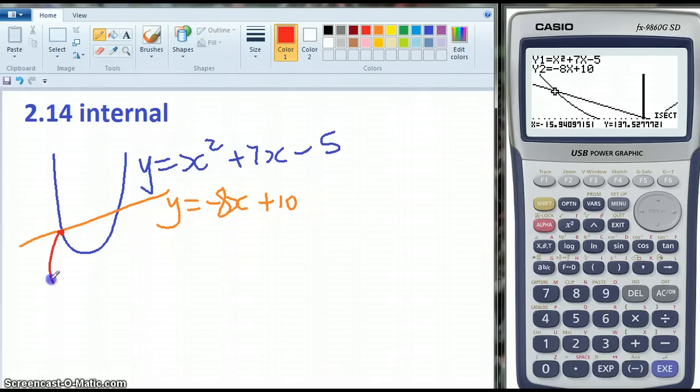This one here I now know is negative 15.94 for my X, comma. Oh, I said 3DP, 941, comma, 137.528, round that. That's my first point of intersection.